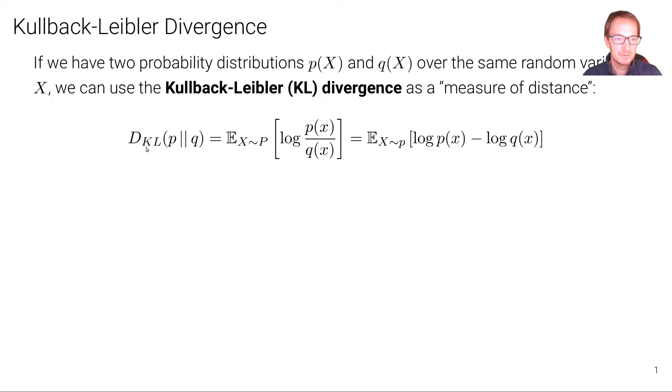We write this mathematically as follows: D, as a symbol for divergence, KL for Kullback-Leibler, of distribution p and distribution q, where one is in front and one is after these vertical bars.